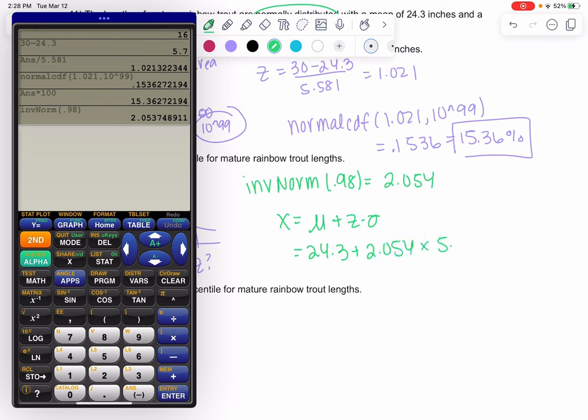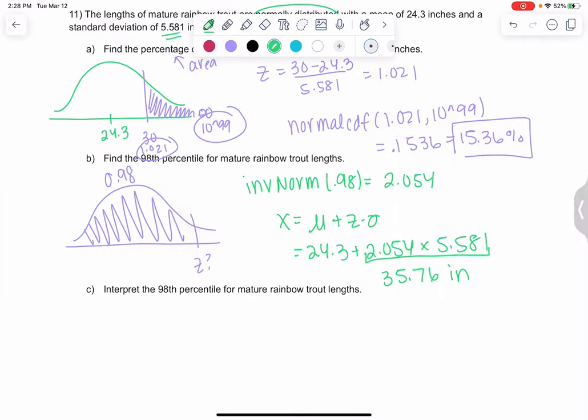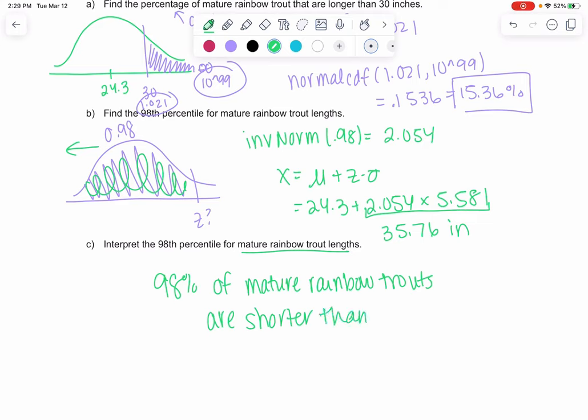The mean was 24.3 plus 2.054, and the standard deviation was 5.581. We could type it all at once. If you do it piece by piece, you have to multiply first. But the calculator does know to do it in order. And we get 35.76 inches. You could round it up to 35.8. The meaning of percentiles is 98% are less than. We can visually see that on the curve. So 98% of mature rainbow trouts are less than or shorter than 35.76 inches. The big thing with percentiles is we have the percent, we have a less than or shorter than, and then the amount that we found.